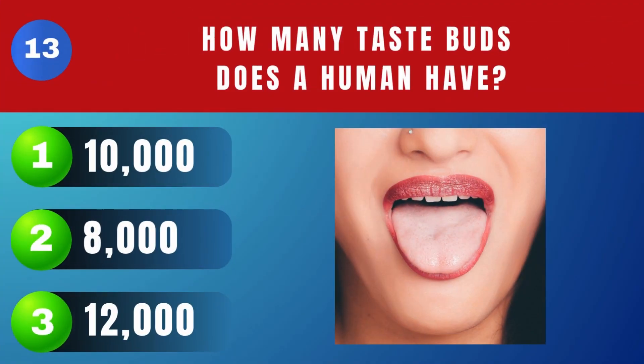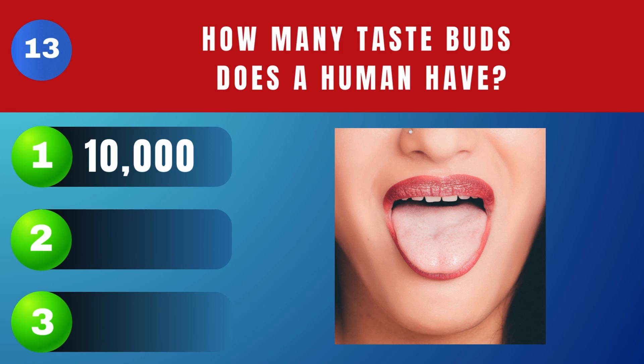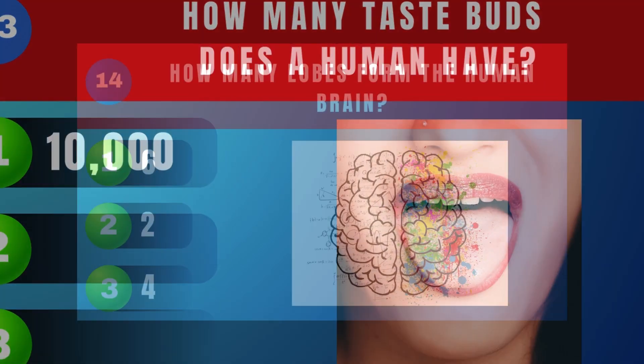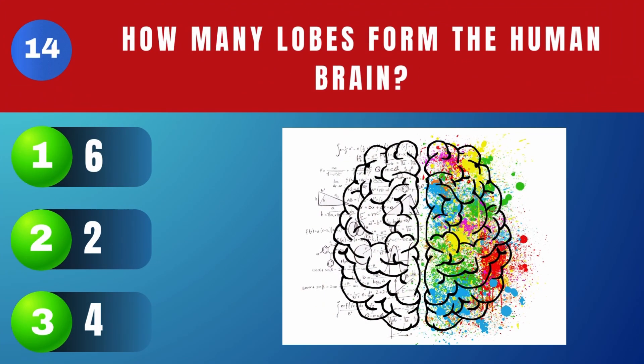How many taste buds does a human have? Around 10,000. How many lobes form the human brain? Four.